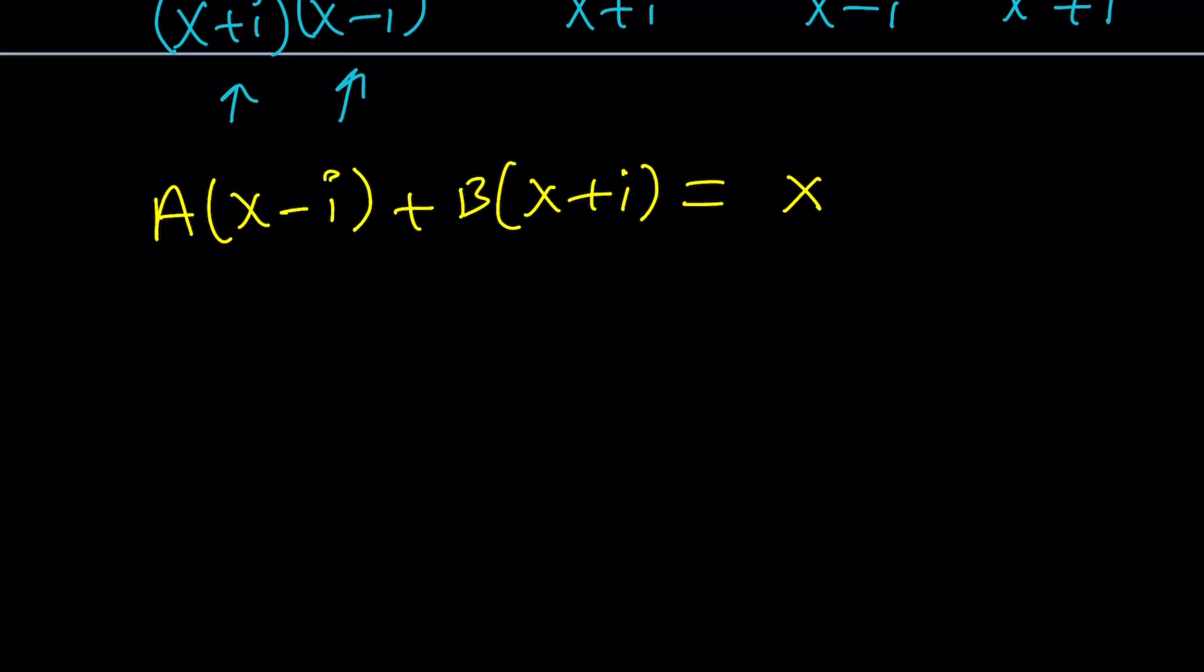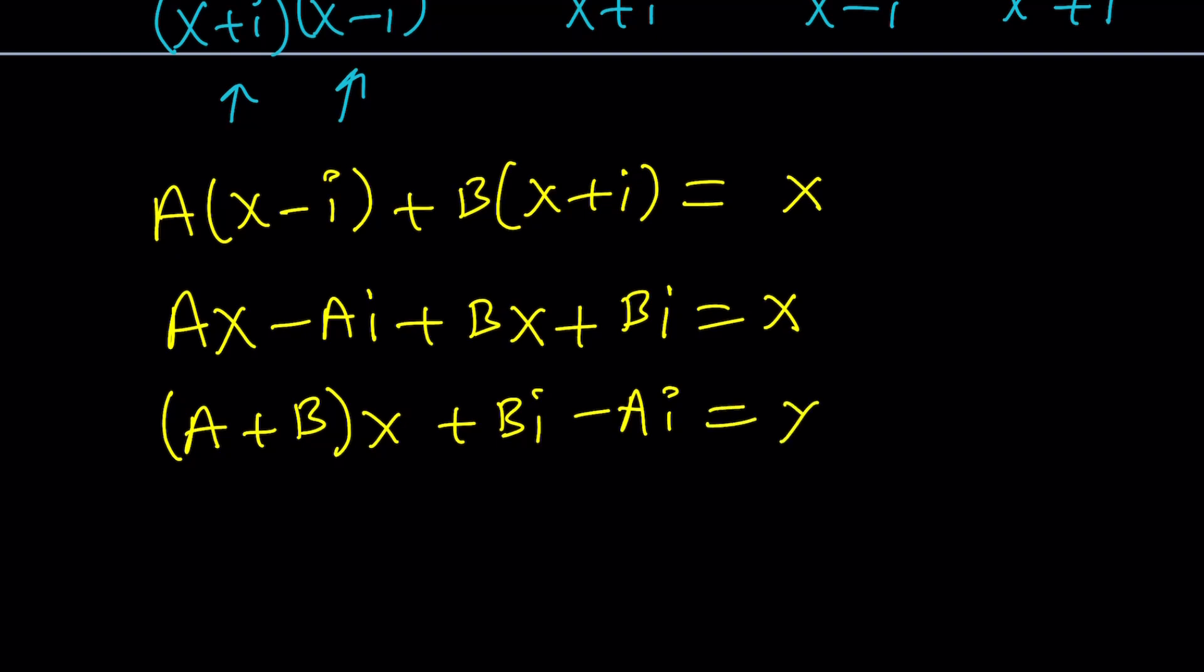Let's go ahead and distribute this. ax minus ai, kind of like artificial integers, plus bx plus bi equals x. And now put the x terms together. a plus b is the coefficient. And then bi minus ai. You don't need to factor out i, because bi and ai are both constants. Now, notice that on the right-hand side, there's no constant term. So this is 0. And the coefficient of x is supposed to be 1, because we have 1x on the right-hand side. Make sense?